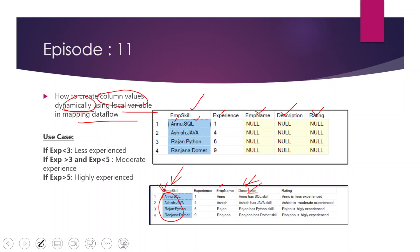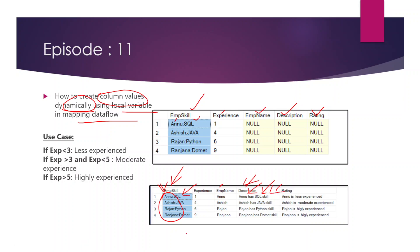For the description column, we have to grab the employee name first and write it dynamically for each row, then append 'has' as a string, then grab the skill value - which is the second half of the first column after the colon - and concatenate it with the word 'skill'. So the description should be dynamically added for each row: Anu has SQL skill, Ashish has Java skill, Rajan has Python skill, Ranjana has .NET skill.